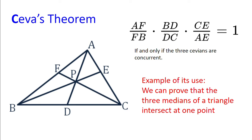and CE divided by AE is also 1. So 1 multiplied by 1 multiplied by 1 is 1, proving that the three medians intersect at one point.